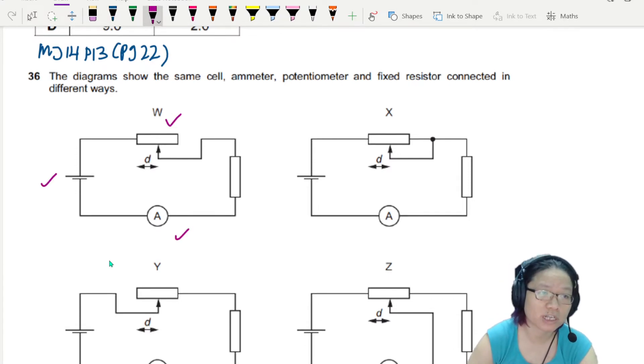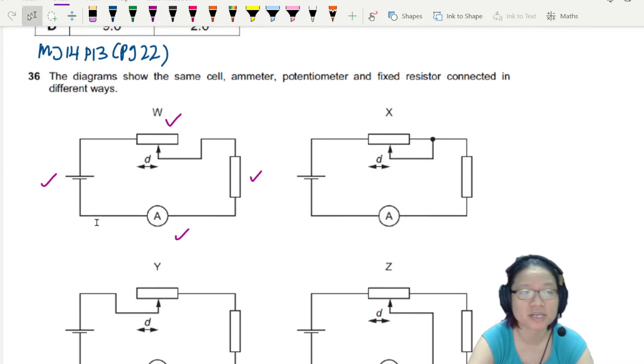Cell, emitter, potential meter, and fixed resistor connected in different ways. So you have circuit W, circuit X, circuit Y, circuit Z.